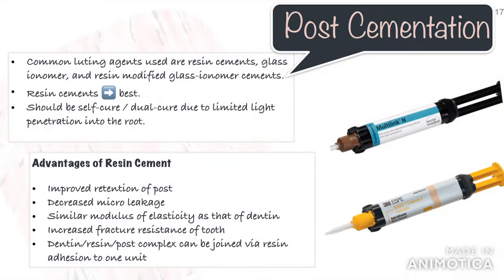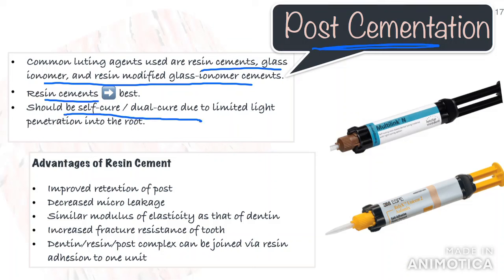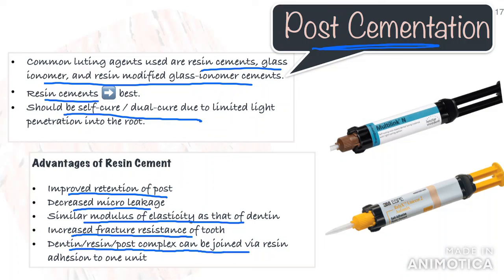Finally, we come to the luting agent used for post cementation. The most common luting agents are glass ionomer cement, resin-modified glass ionomer cements, and resin cements. The recent trend has been towards resin cements because they increase retention and tend to leak less. It is preferable to use a self-cure or dual-cure resin cement because of limited light penetration into the root even with translucent posts. The advantages of resin cements are enhanced post retention, decreased micro-leakage, a modulus of elasticity similar to dentine, prevention of root fracture susceptibility, and a potential for monoblocking — where the dentine, resin, and post can be joined by resin adhesion into one unit at least for a short period of time.